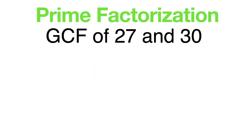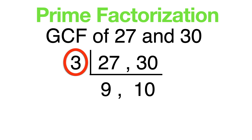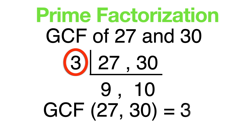Prime factorization is a way of expressing a number as a product of its prime factors, starting from the smallest prime factor. The smallest prime factor is 2; however, 2 does not divide 27 and 30. The next smallest number is 3. Three divides both 27 and 30, and there is no prime number that divides 9 and 10 together. GCF is the product of the factors common to each of the given numbers. Therefore, GCF of 27 and 30 is 3.